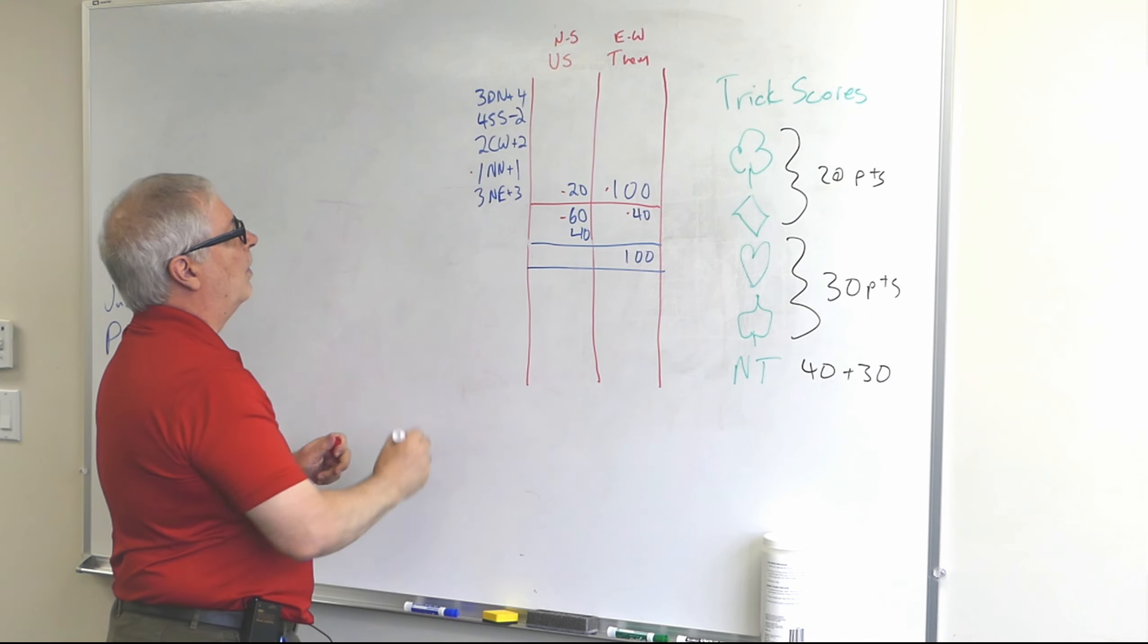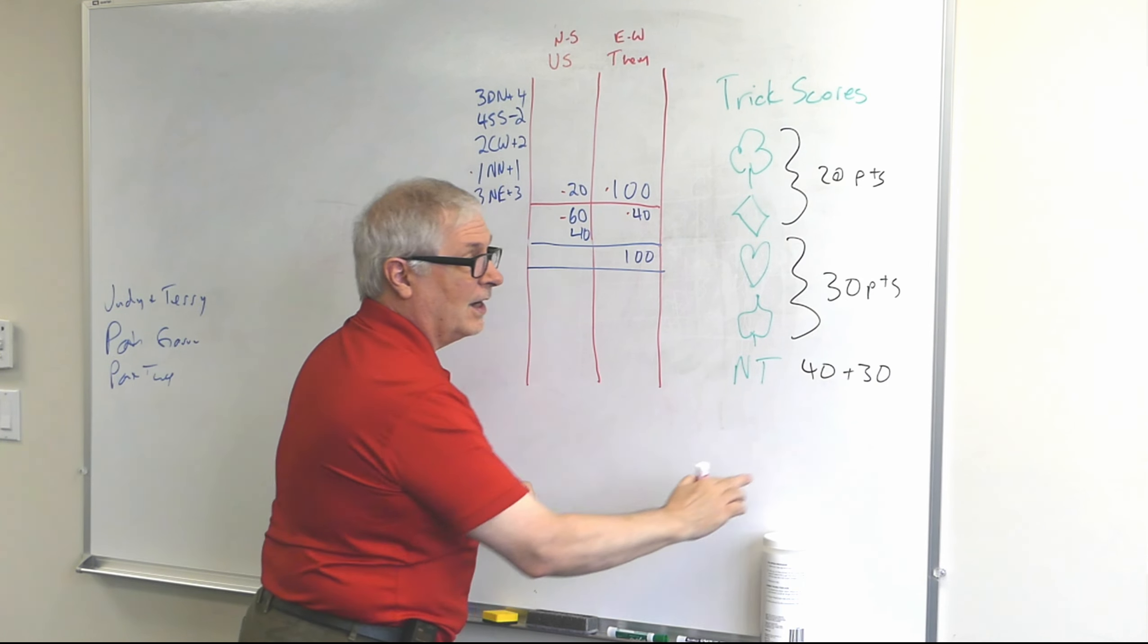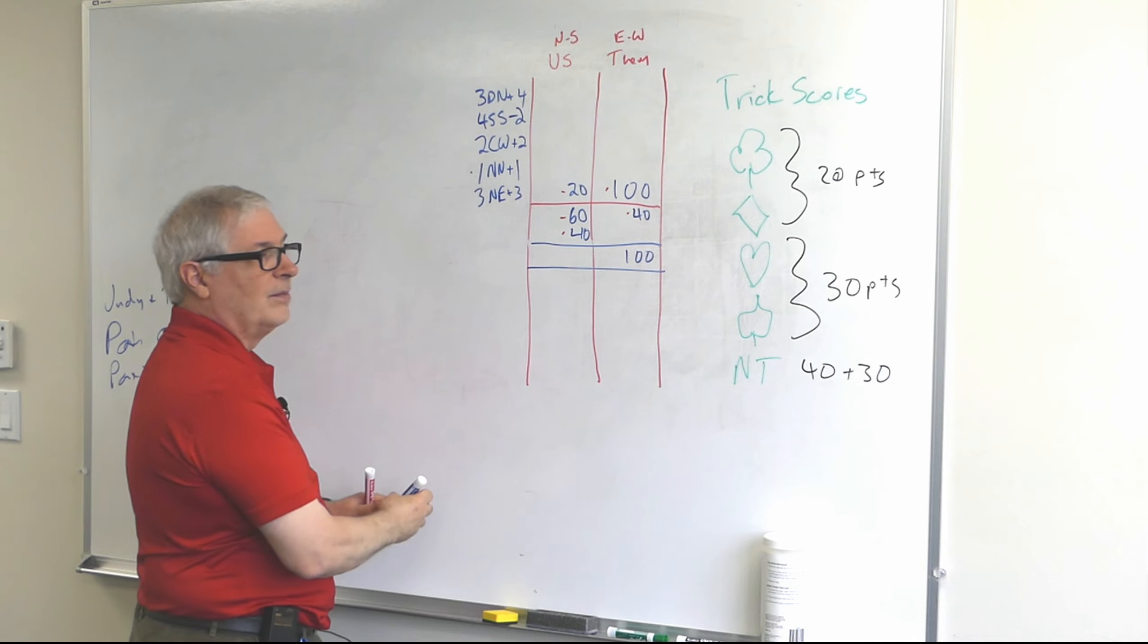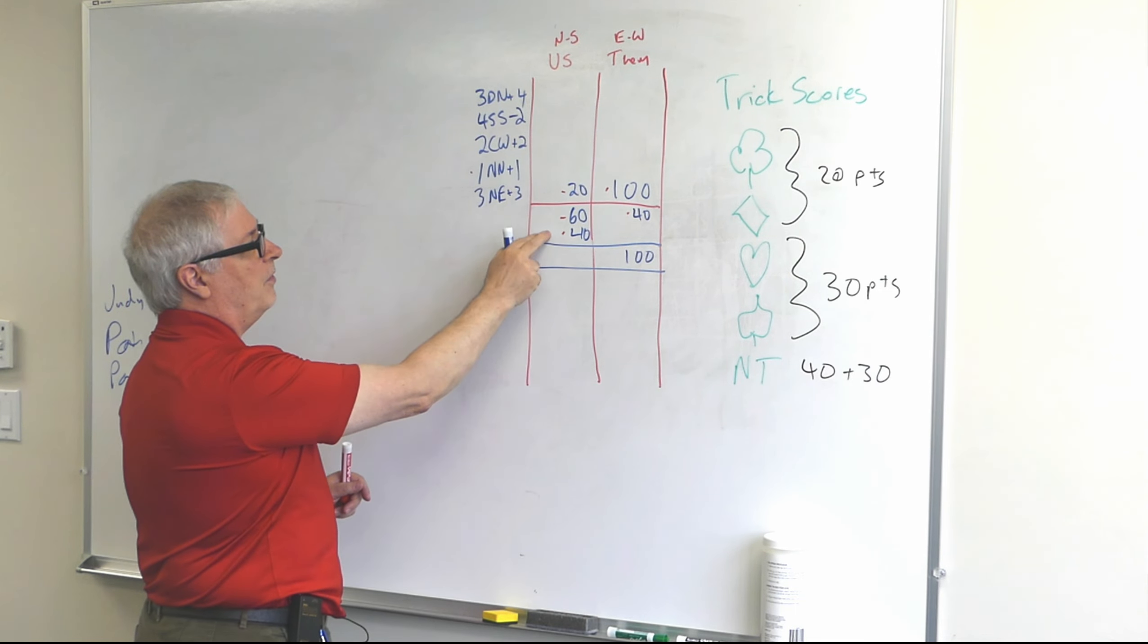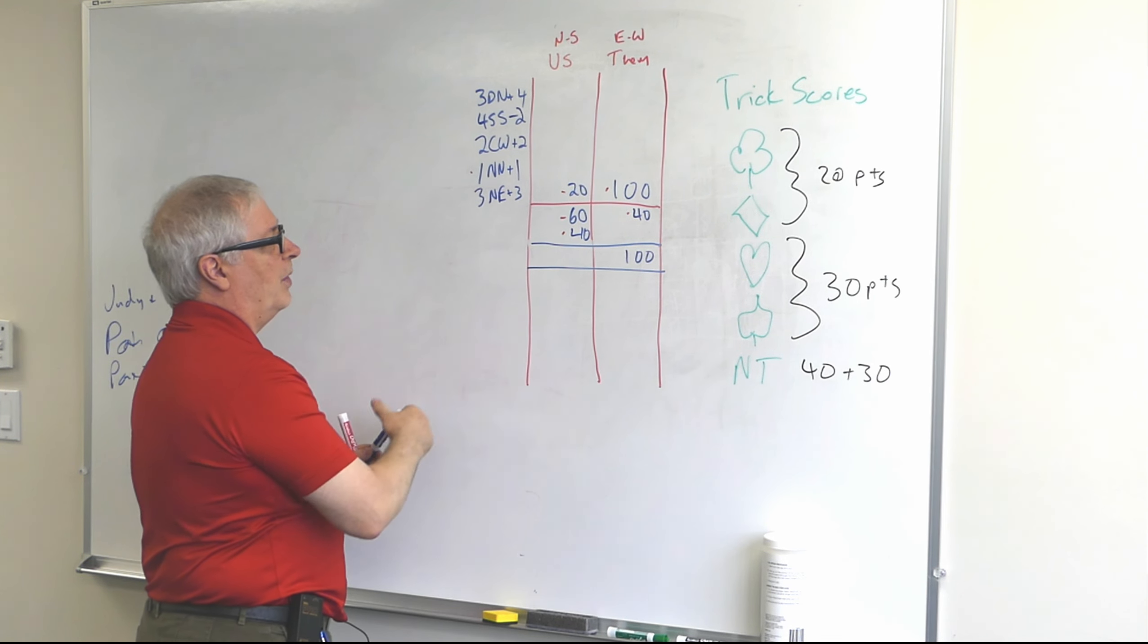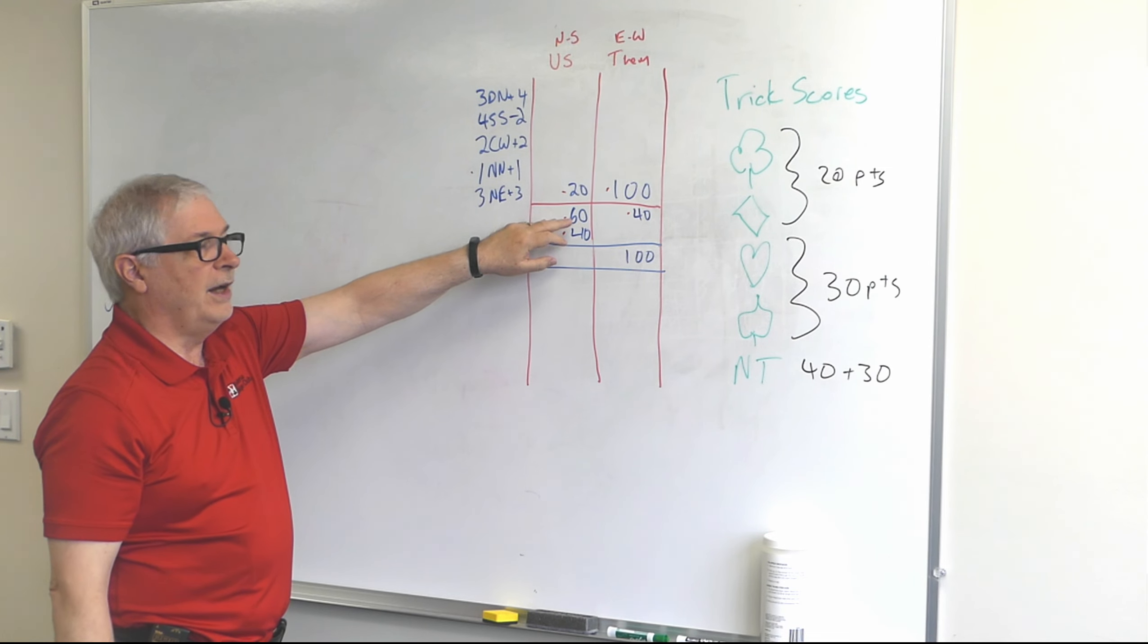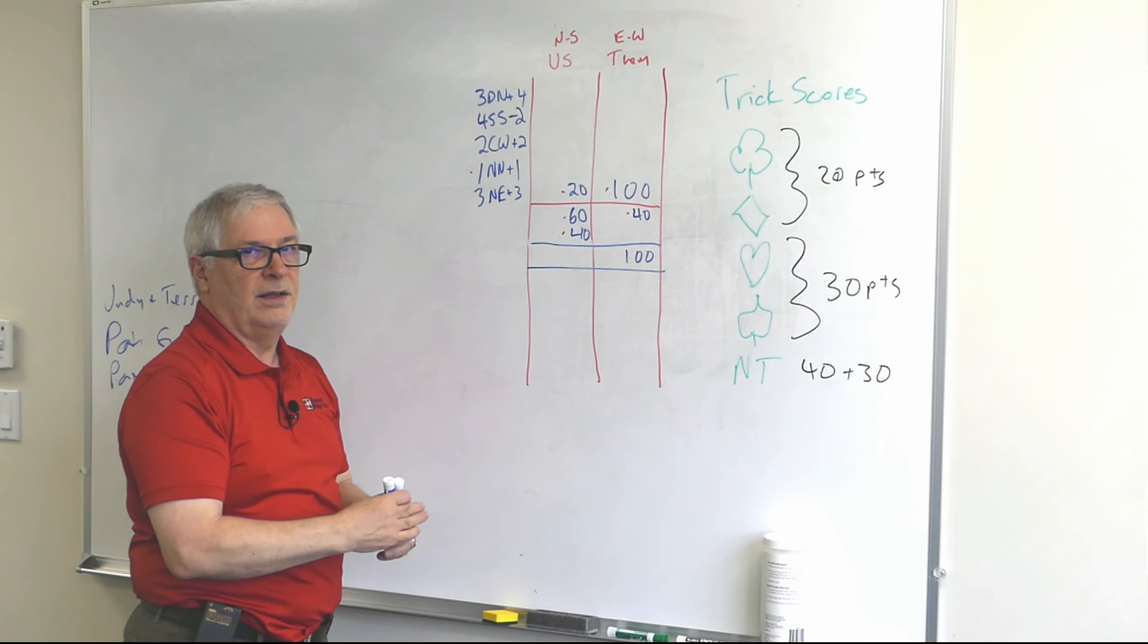The fourth hand - one no trump by North making one. Well that first trick in no trump is worth 40, the second and third ones are worth 30, but we made the one so that's 40 points. Now this adds up to a hundred, so our side - these are both part scores because we can combine them to make a game. And when the part scores add up to a hundred, we get a hundred, we get a game, we draw a line and our side has won one game. So as soon as one side has earned a hundred points below the line, you draw a line and that side has won a game.